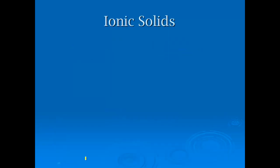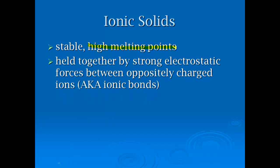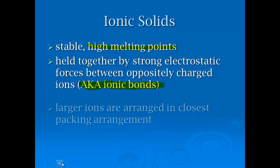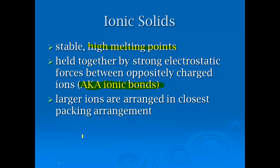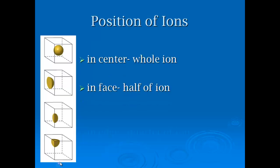We've got ionic solids. These have very stable, very high melting points because they're held together by these very strong electrostatic forces, otherwise known as ionic bonds. Ionic and covalent bonds are the strongest. That's why ionic bonds and covalent network have some of the highest melting and boiling points that we're going to find. Larger ions are arranged in closest packing arrangement. The smaller ions will fit into the holes, and they lower their energy.